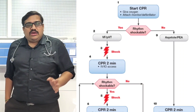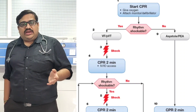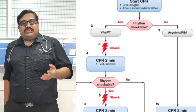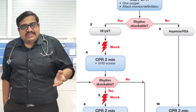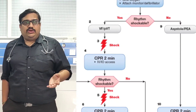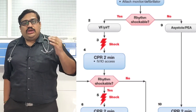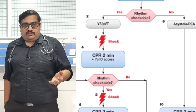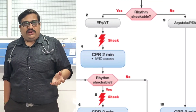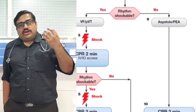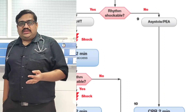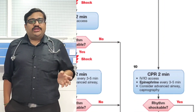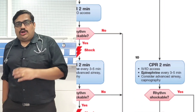You have started CPR, you are giving oxygen, and you attach the monitor and defibrillator. Once you attach the defibrillator, the first thing you need to do is analyze the rhythm. Ask the person to stop CPR briefly — not more than 10 seconds — and analyze the rhythm to see whether it is a shockable or a non-shockable rhythm.